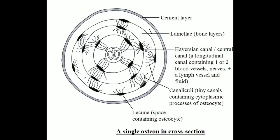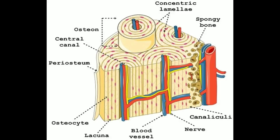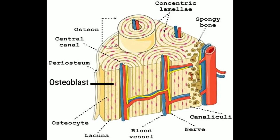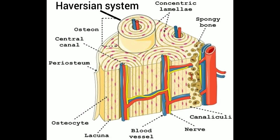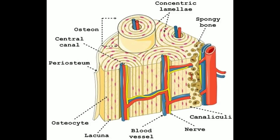In lacuna, you will find different types of cells: osteoblasts, osteocytes, and osteoclasts. Osteocytes and osteoclasts are inactive bone cells, whereas osteoblasts are active bone cells. In a mammalian bone, you will find a peculiar haversian system which contains a haversian canal in the center. The haversian canal encloses an artery, vein — that is blood vessels — and nerves.